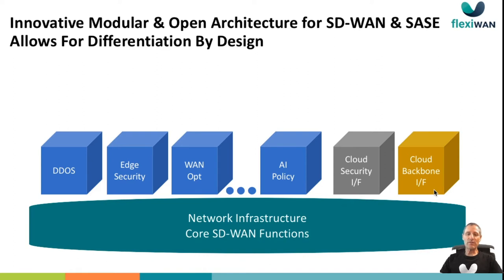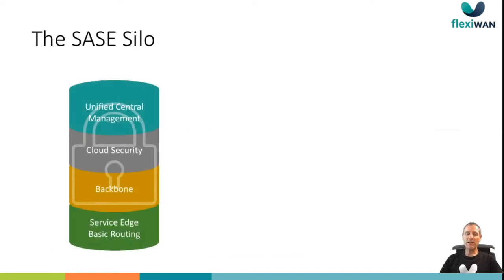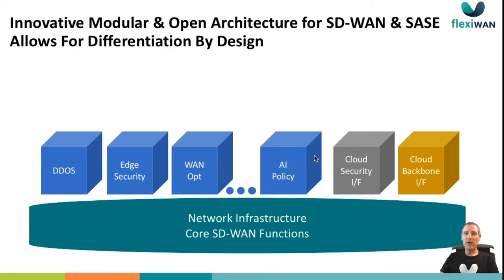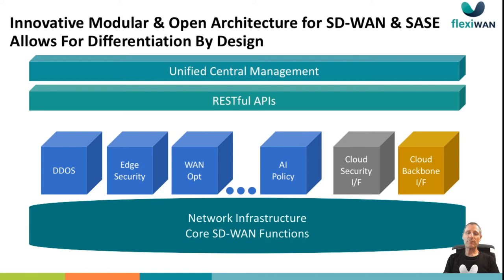This means that an enterprise or a service provider can select which vendor to take for the cloud security services or as a backbone, and even change this vendor over time. This is very different from the typical SASE silo that forces you to a single vendor for everything without any ability to change. This open approach also includes the REST APIs on top and the central management system. Through the REST APIs, you can build this management together with other enterprise applications that you're offering to your customers and have one unified management, or even build specific dashboards for customers.